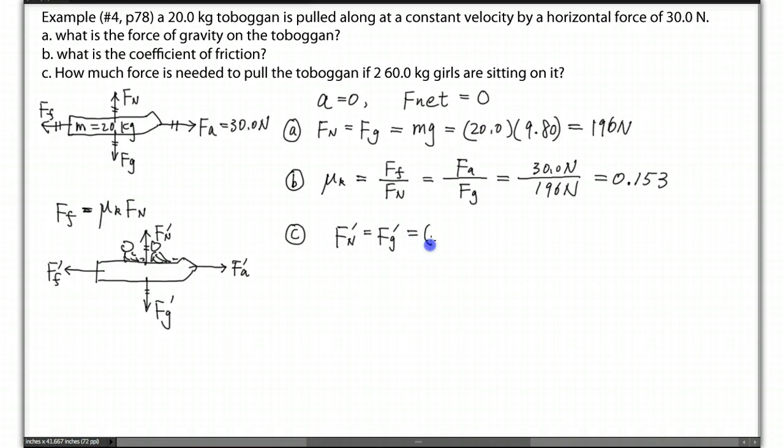Now the Fg right now is 20 kg, that's the mass of the toboggan, and plus 60 kg, and plus 60 kg, because of the two girls. I just skipped the unit. And then times 9.8. So that's going to be the new normal force. And the force of gravity, they're both the same.